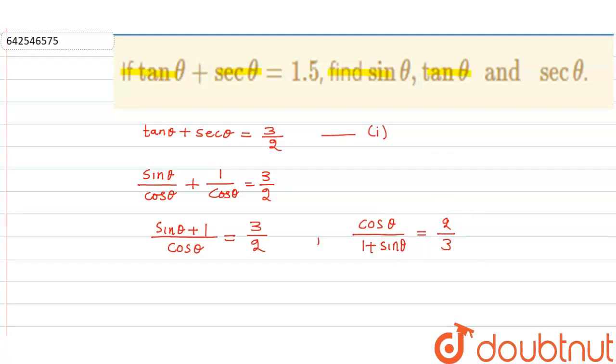Now if you rationalize this with respect to 1 plus sin θ, this is cos θ into 1 minus sin θ upon 1 plus sin θ into 1 minus sin θ. That means 1 minus sin squared θ, and that becomes cos squared θ. Now cos θ and cos θ will be cancelled out.